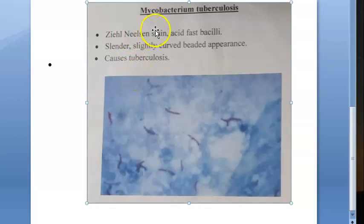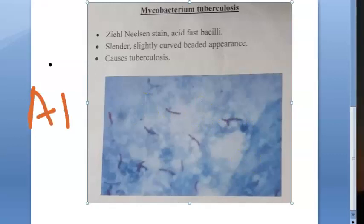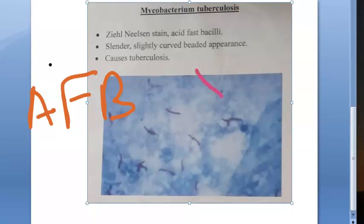Under Ziehl-Neelsen stain, which is an acid-fast stain, you can see acid-fast bacilli (AFB). Even if you apply acid, it will not lose the stain — that is the concept. You can see the pink color, curved beaded appearance, and they can also be found in pairs.